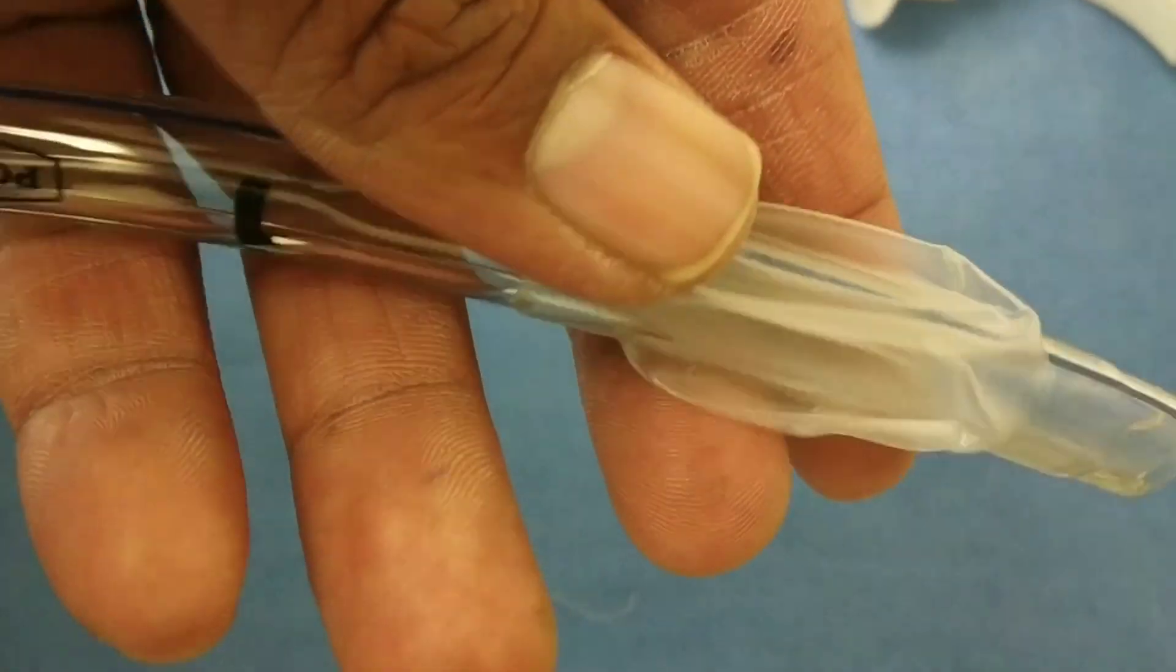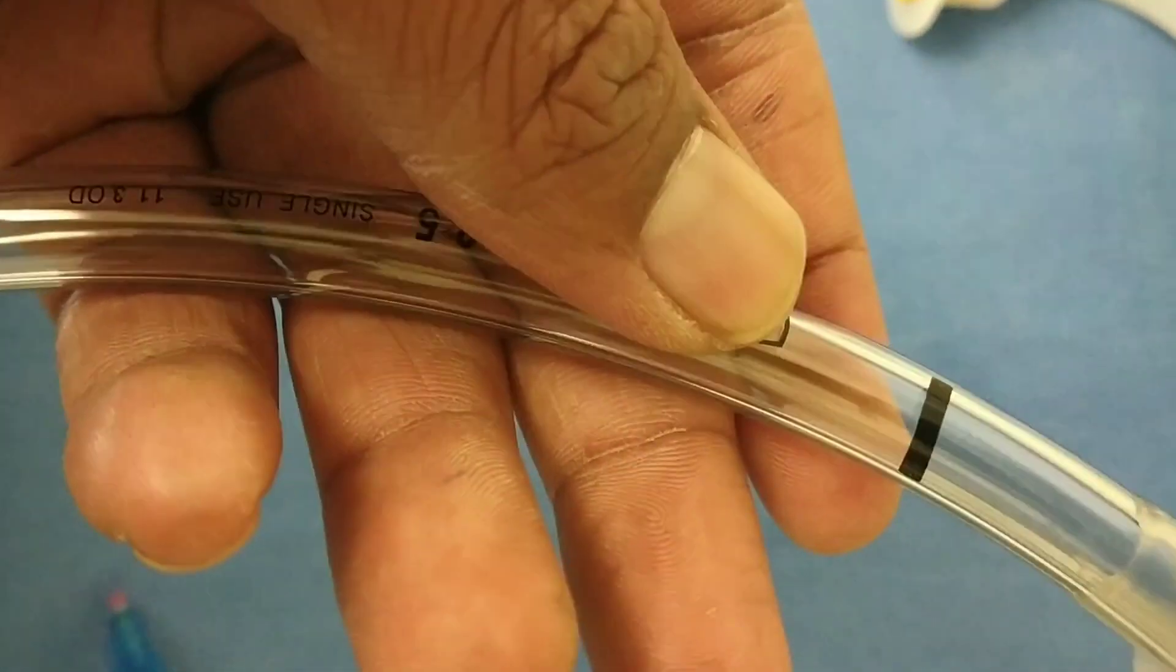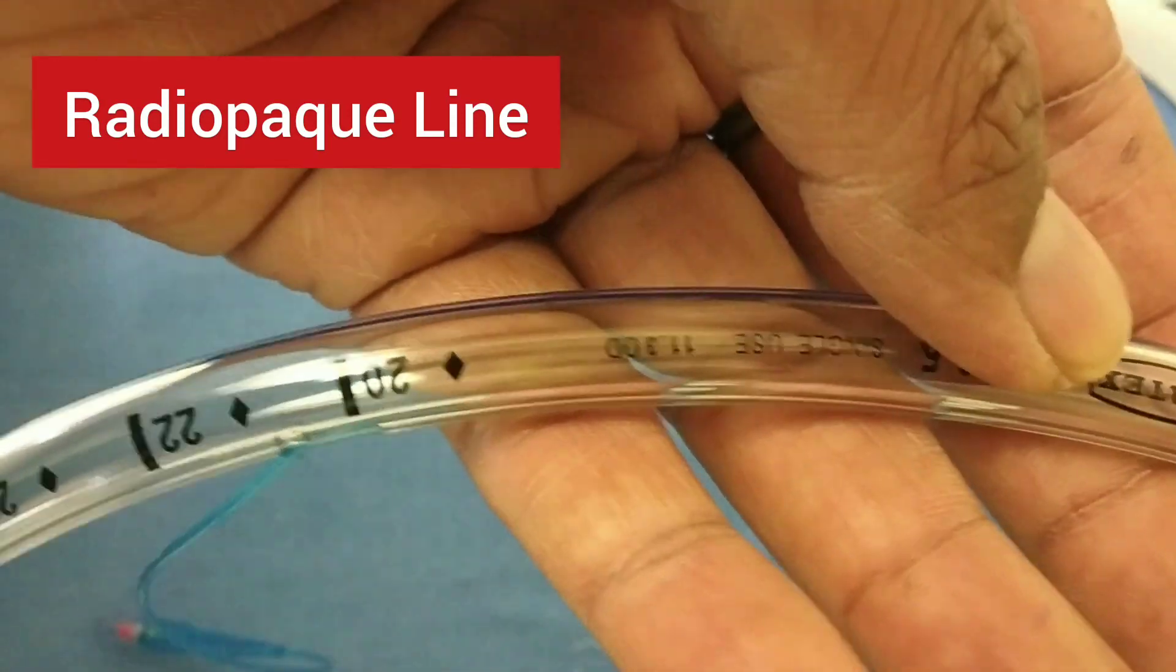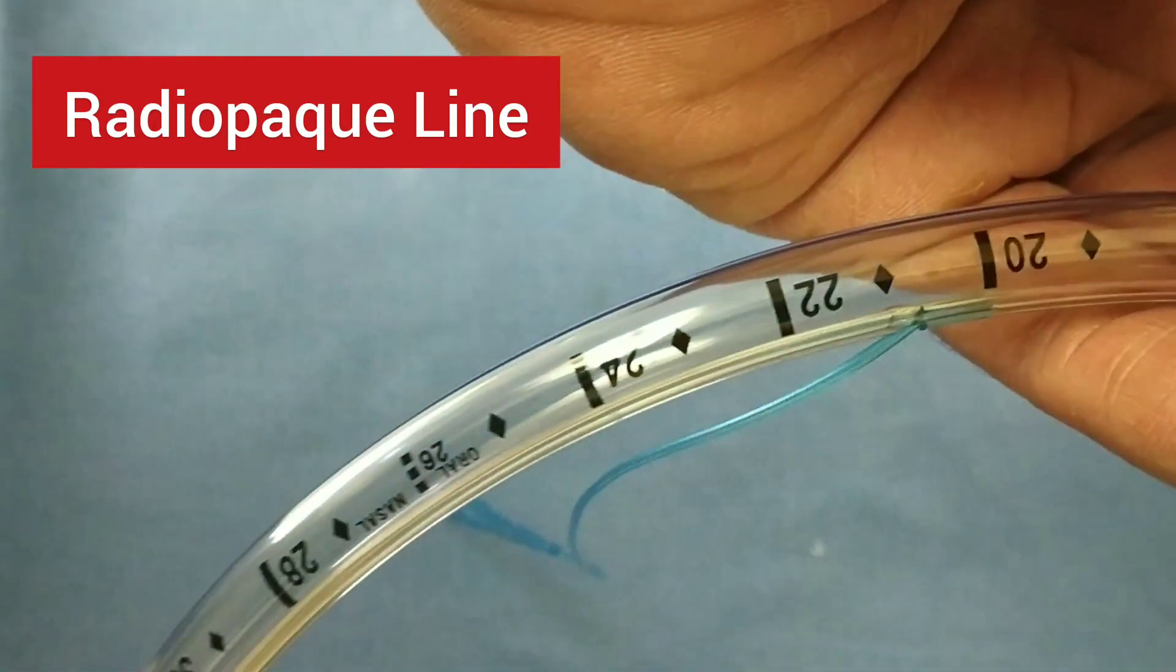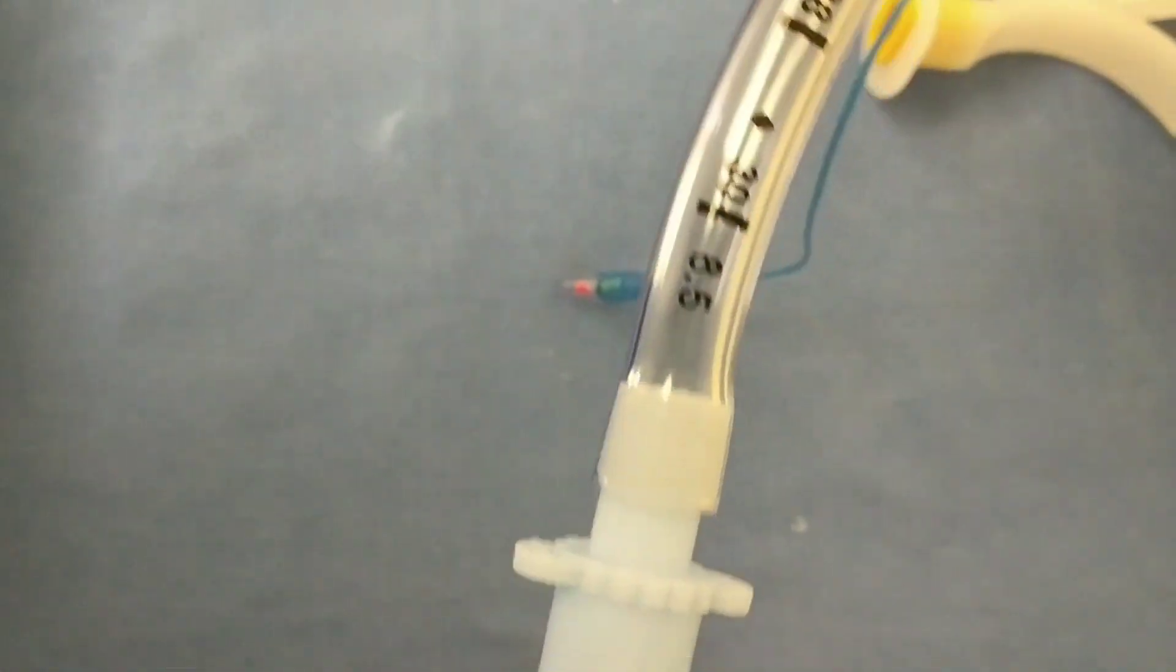In general practice in ICUs, after every intubation, one x-ray is taken to find out whether the ET tube has been fitted properly or not. The radio opaque line runs continuously from start to end of the ET tube. There are also values given for the internal diameter of the ET tube.